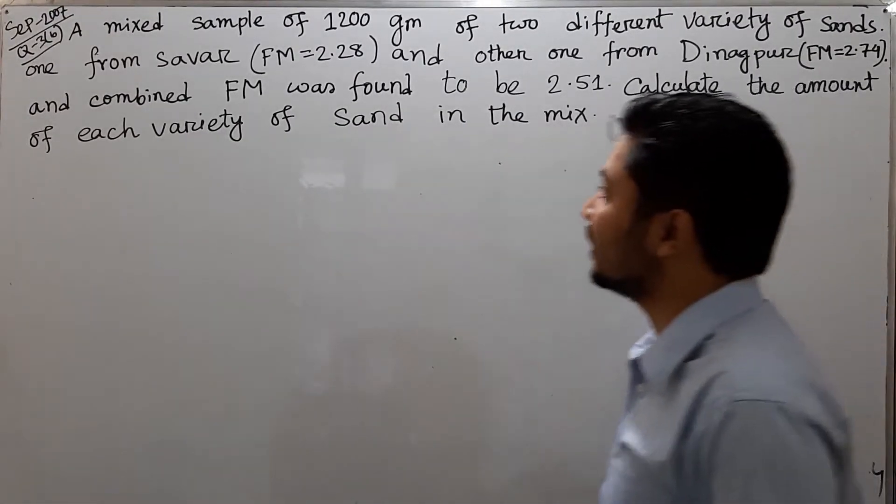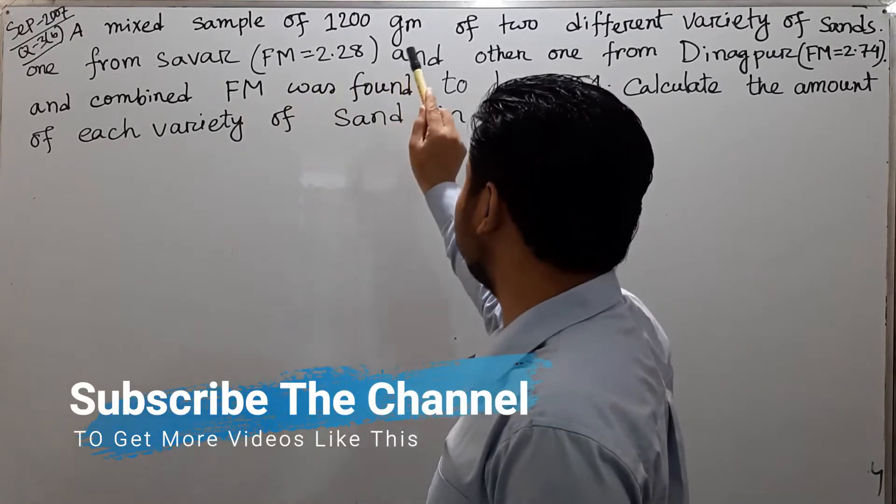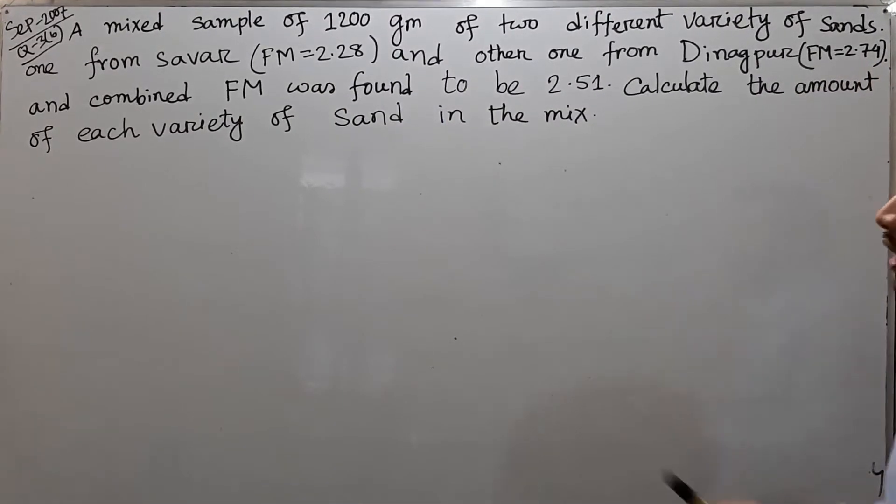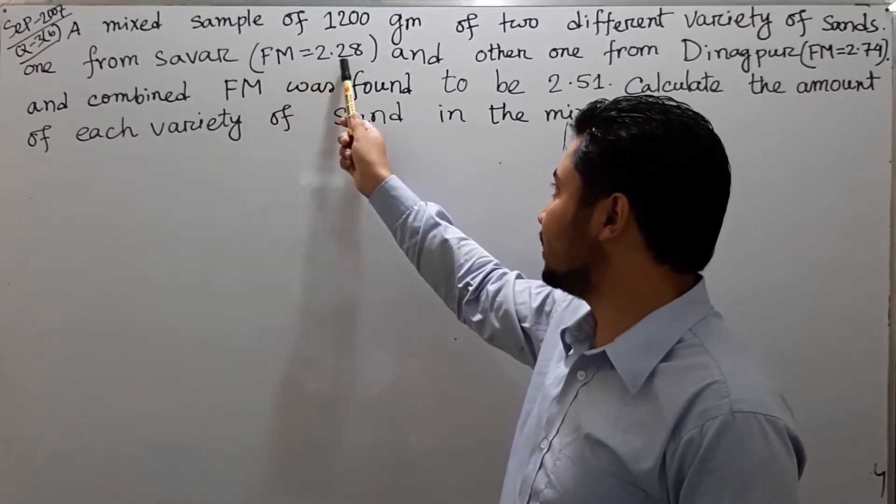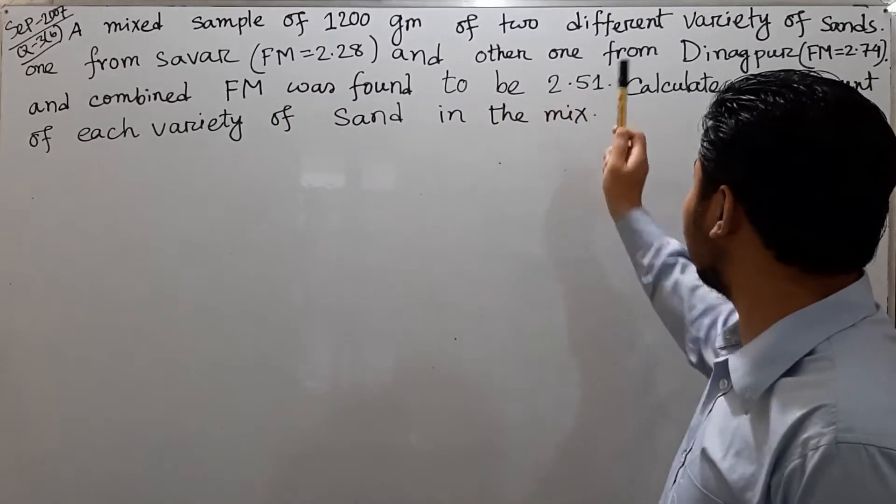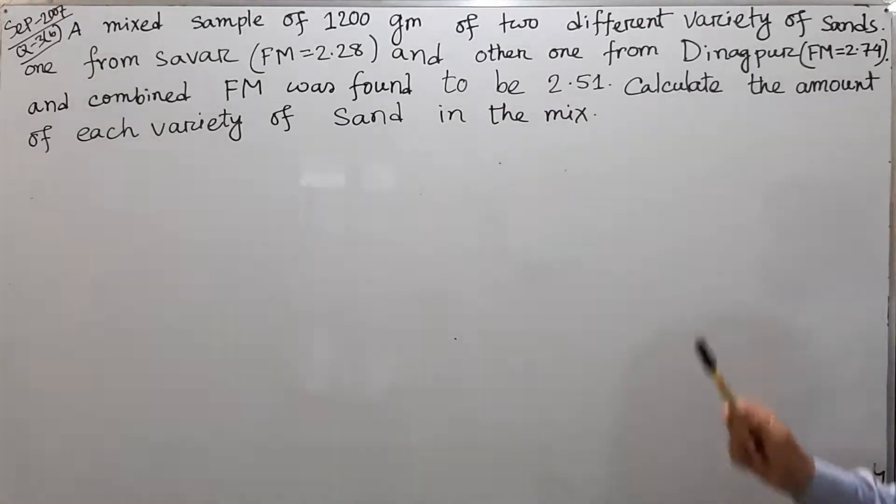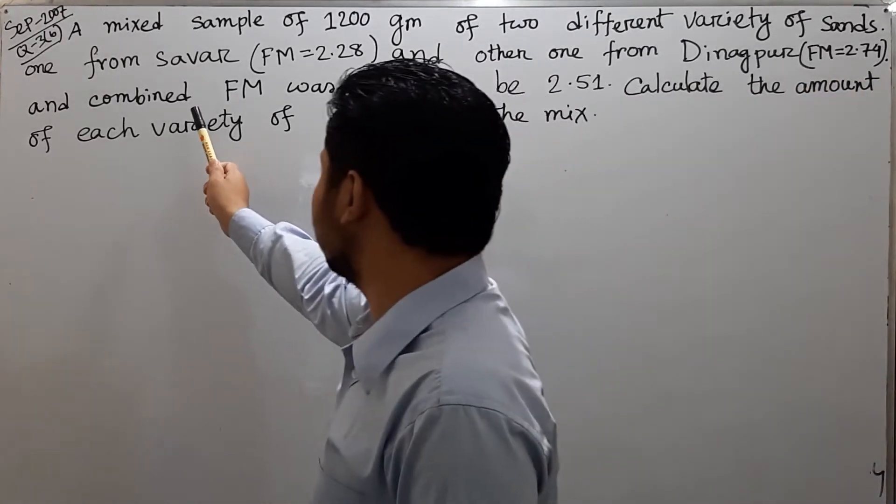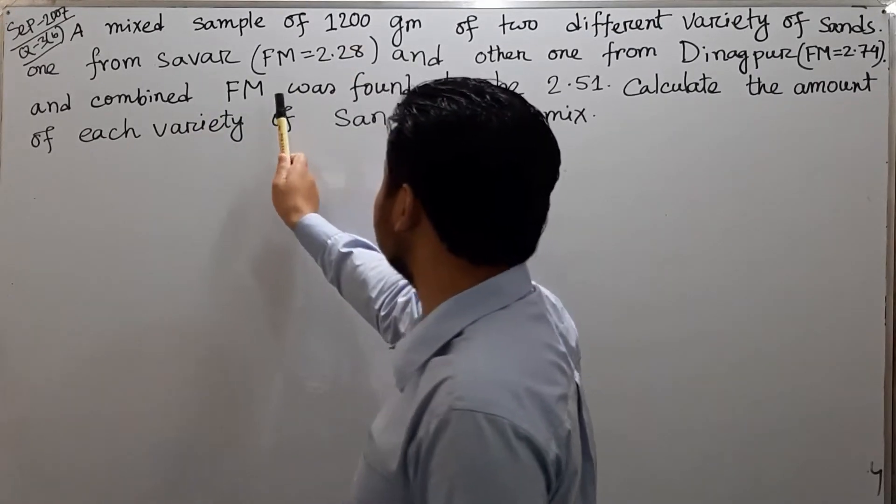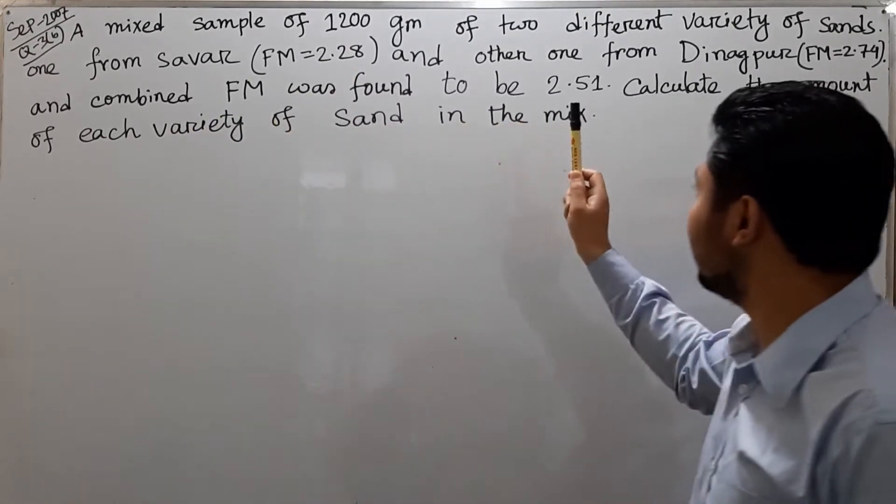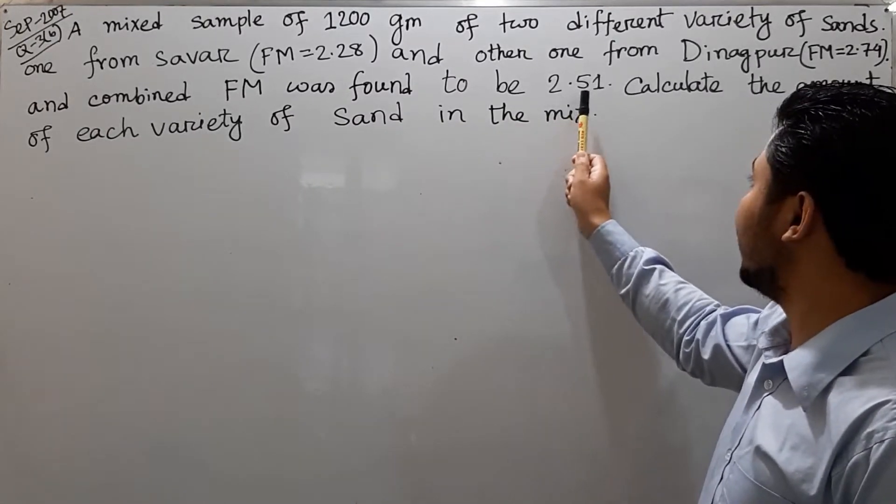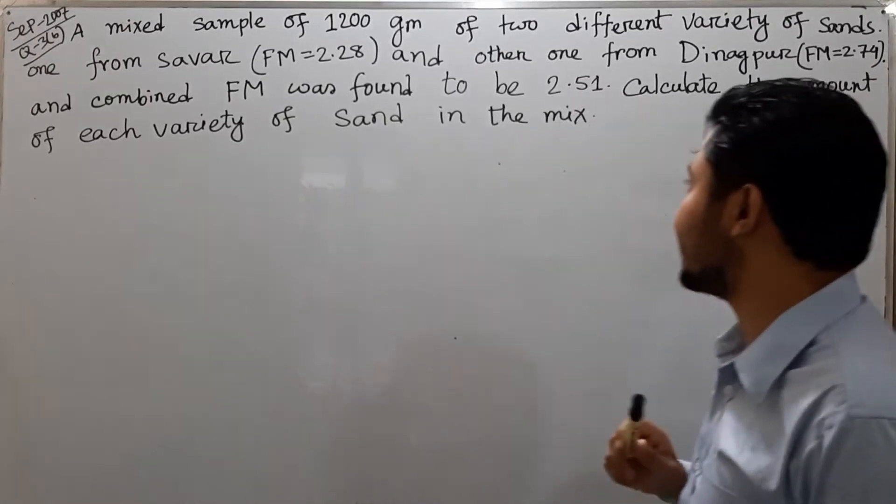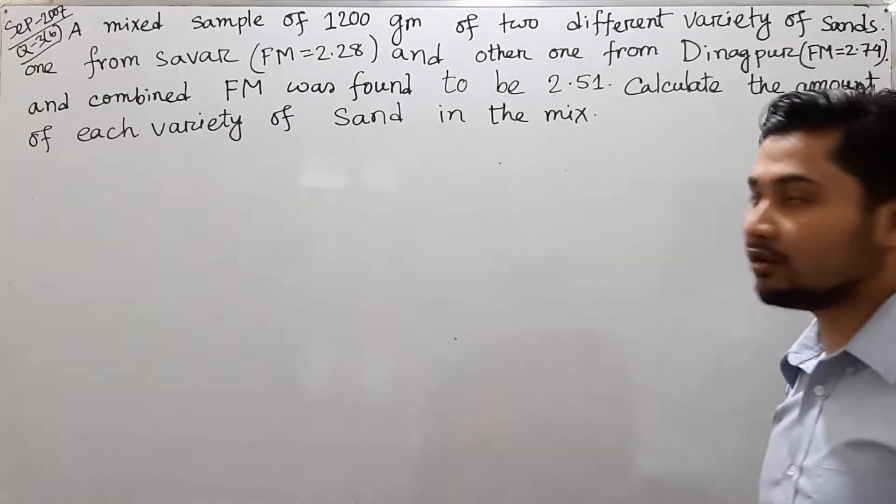The question is: a mixed sample of 1200 grams of two different varieties of sand, one from Savar FM 2.28 and the other from Dinajpur FM 2.74, and the combined FM was found to be 2.51. Calculate the amount of each variety of sand in the mix.